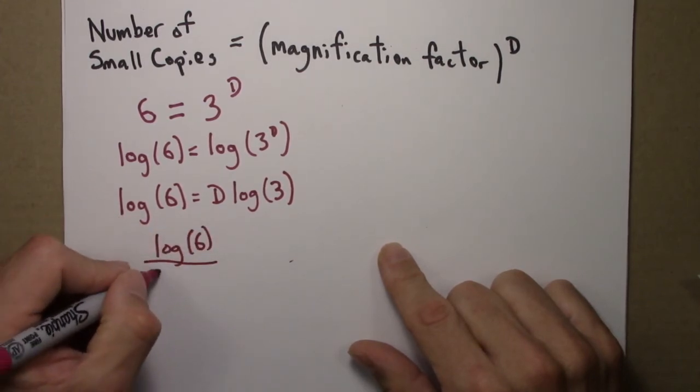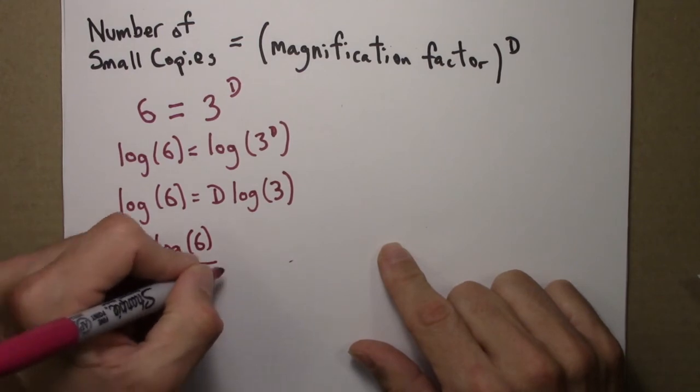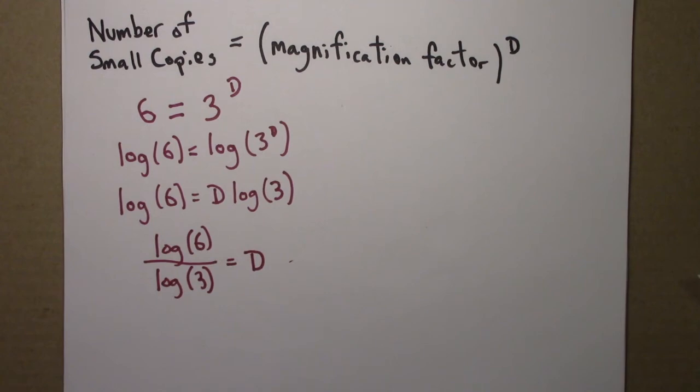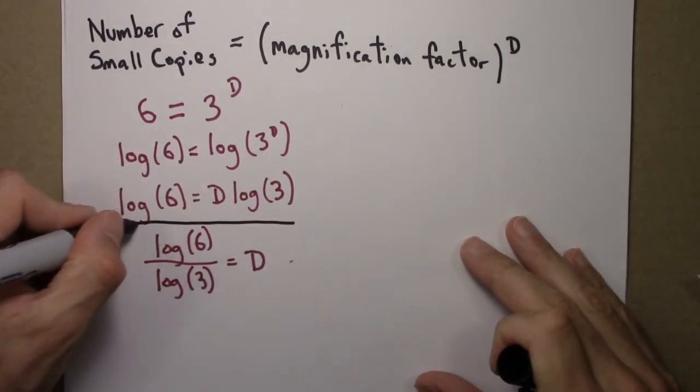Log six over log three. And that's our dimension. Log six over log three. There it is.